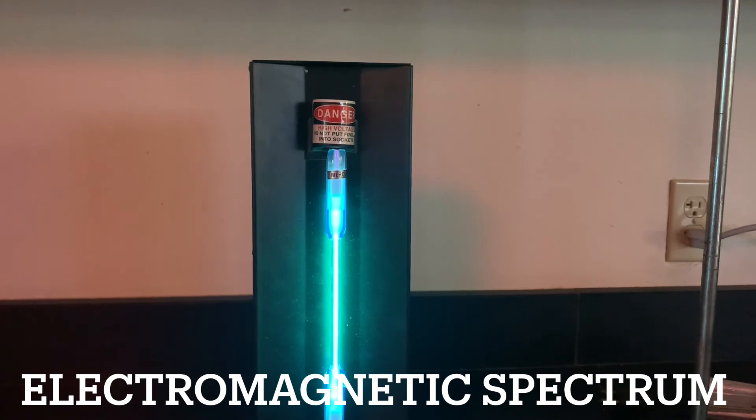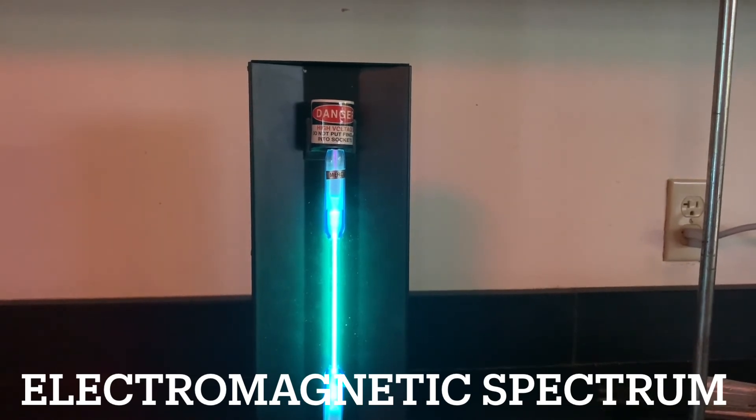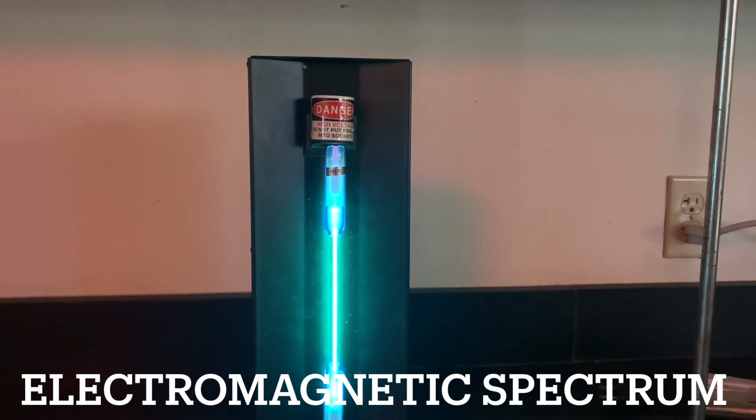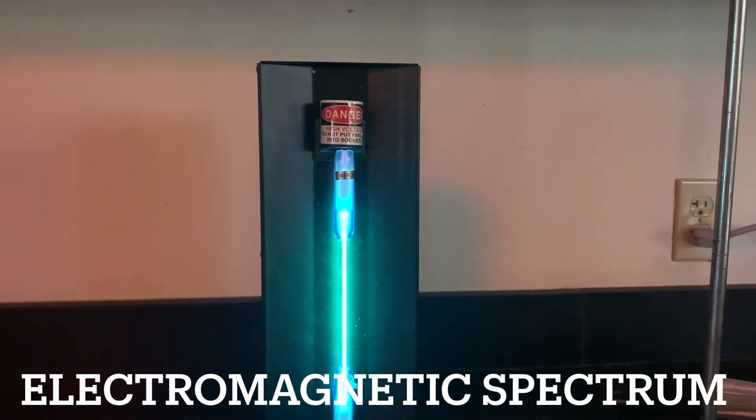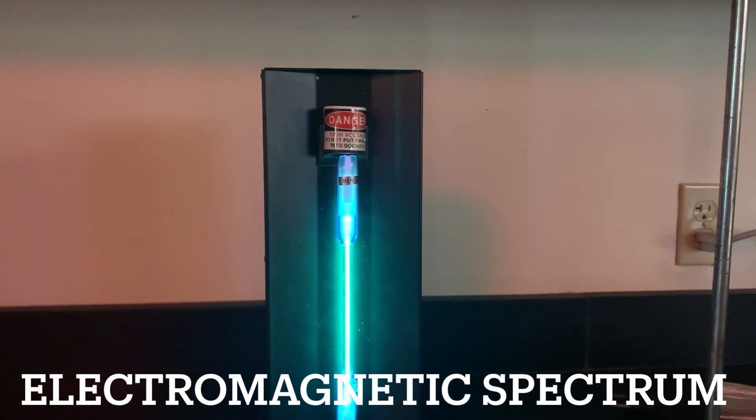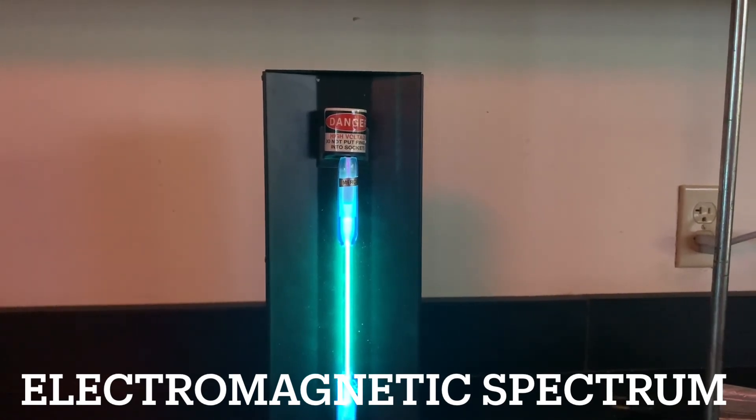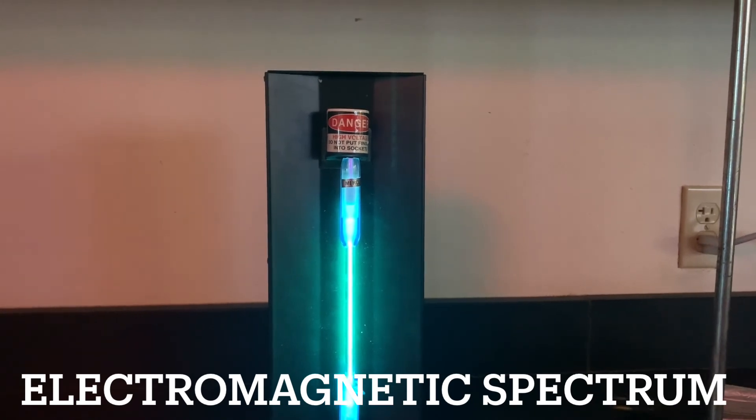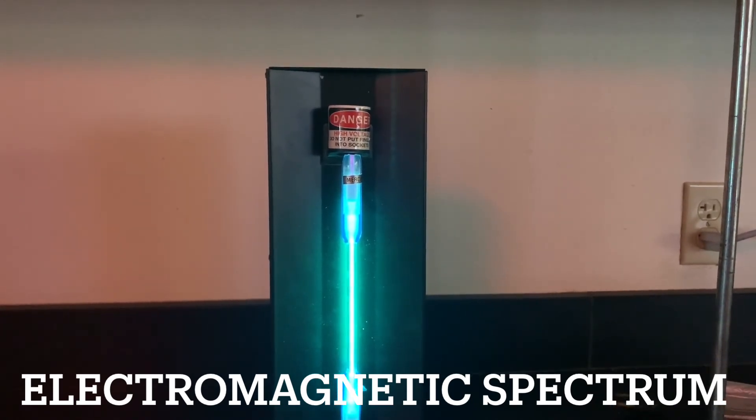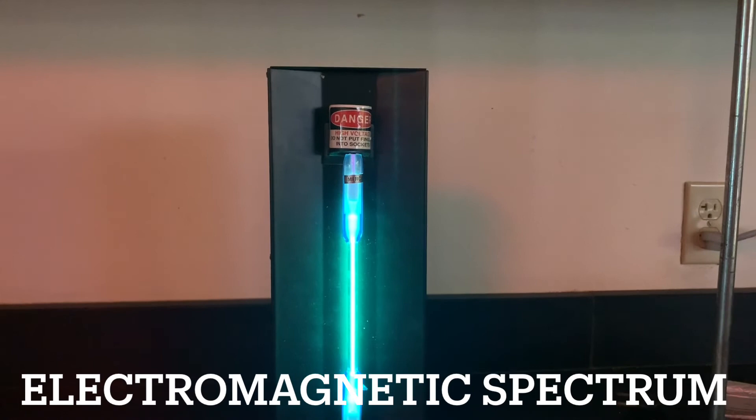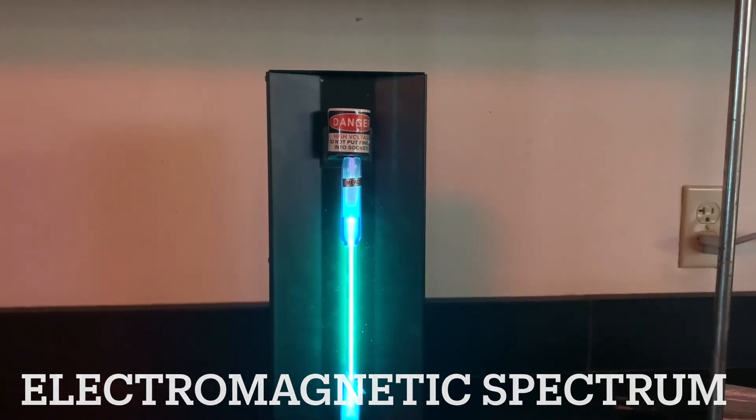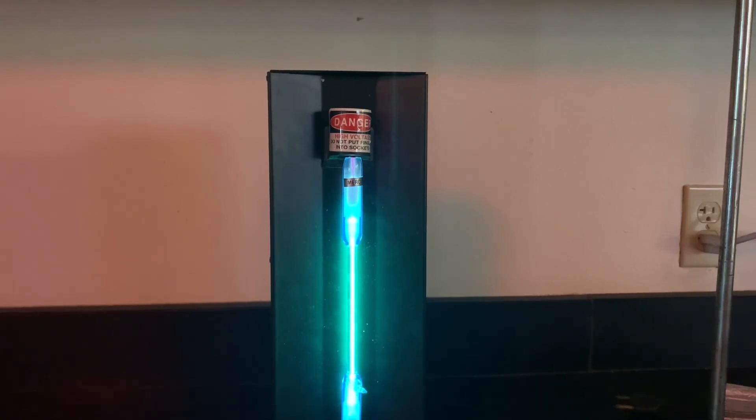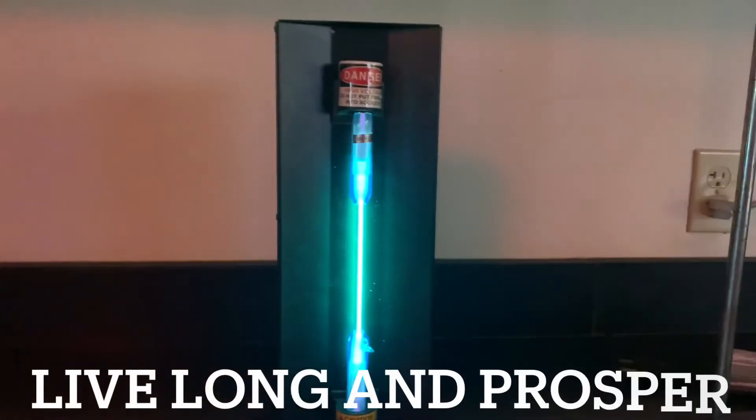Visible light has certain ranges for the energy. Remember we talked about quantum theory, we talked about Planck's theory of quanta or packets of energy. What you're seeing when you look through the spectrometer, you're seeing those packets of energy. That's what those lines represent.